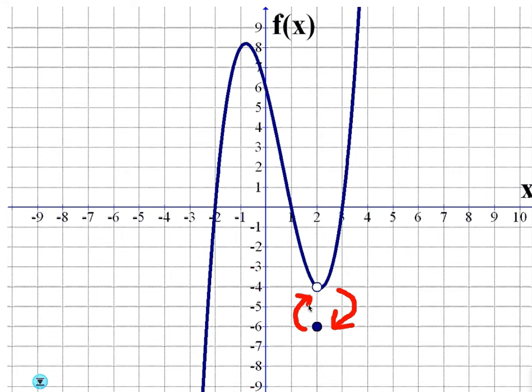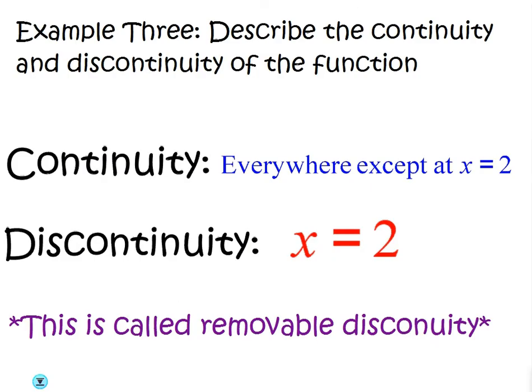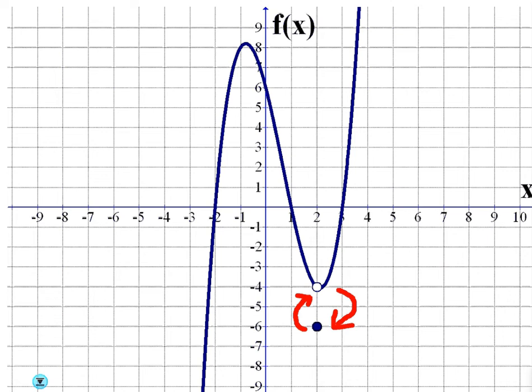Because you can simply take that point and put it back up into the hole, we call it removable discontinuity. So, in other words, it almost looks like you just took that point and you moved it down. You removed it. Or moved it.